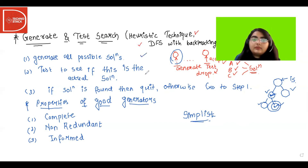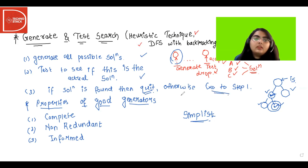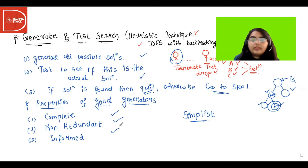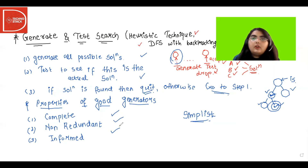To summarize: Generate and Test Search generates all possible solutions, tests each to see if it is the actual solution, quits if found, and otherwise goes back to step one. Properties of good generators: complete, non-redundant, and informed. It is a simple but important searching technique. Thank you for watching — please like, share, subscribe, and press the bell button for the latest updates.